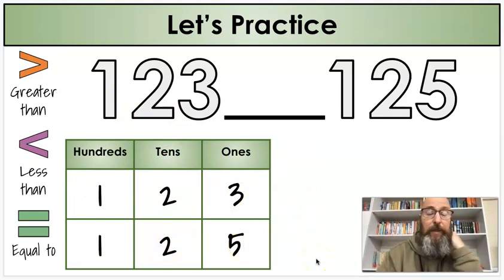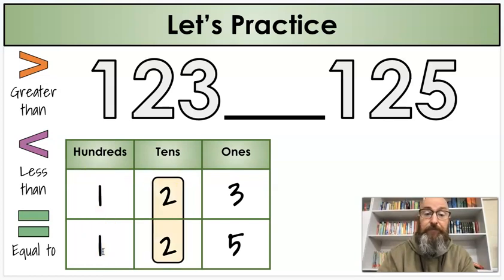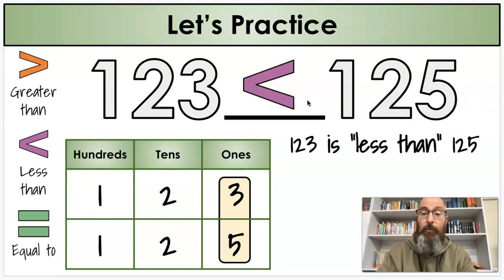Next I'm going to compare. When I compare these two numbers using place value, I always start in the hundreds place. I always start with the largest place value there. So I'm going to compare 100, 100, that's the same. Next, I'm going to compare the tens place. 20, 20, that's the same. I'll compare the last one. Three, five, oh wait. Three is less than five. So this three is less than five. That means I'm going to use the less than symbol, which means 123 is less than 125.